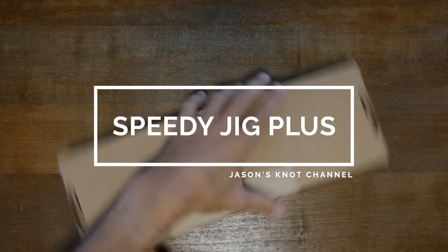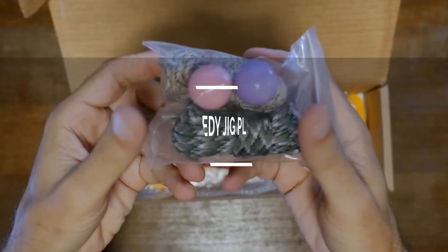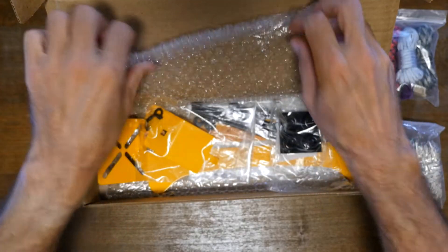So I ordered the Speedy Jig Plus paracord bracelet kit. Out of the box, the kit came with a few hanks of paracord, some three-inch buckles, and a stainless steel lacing needle.